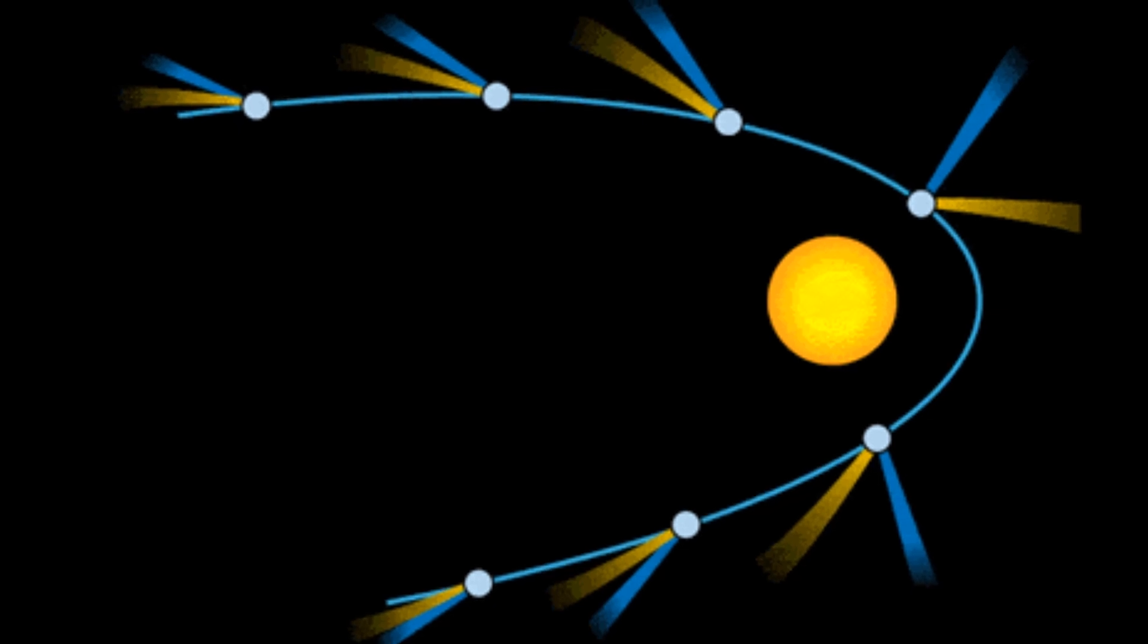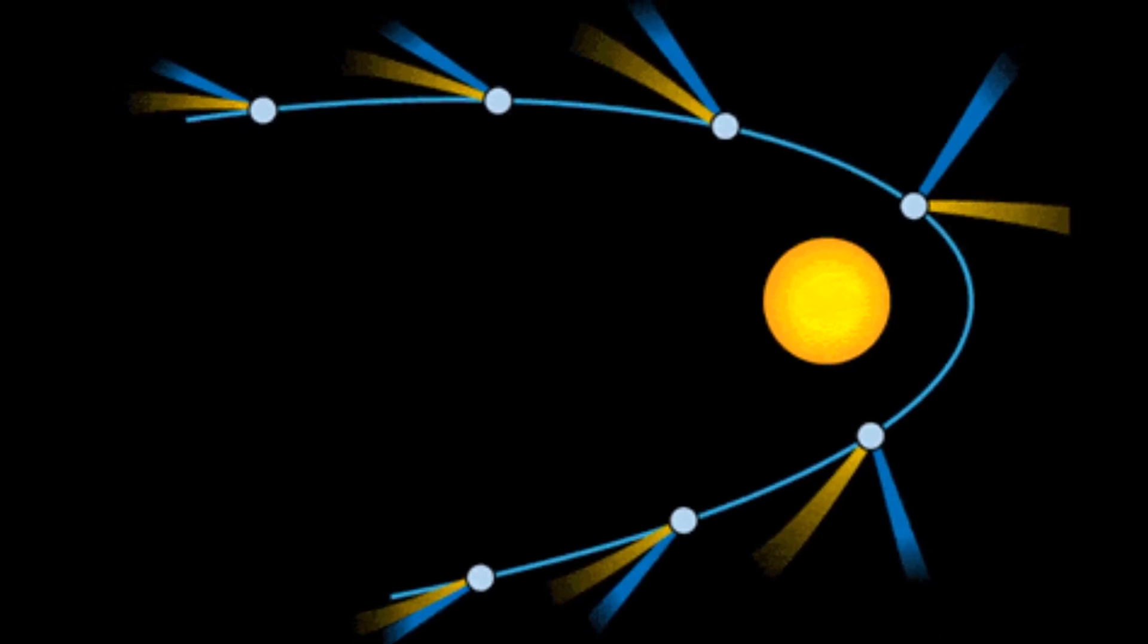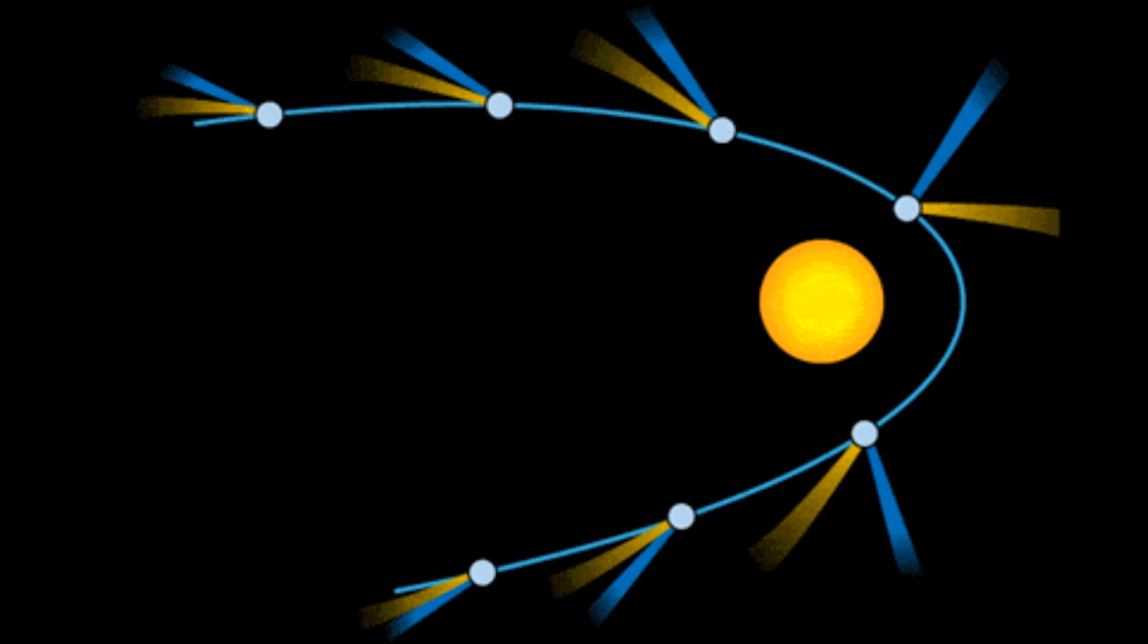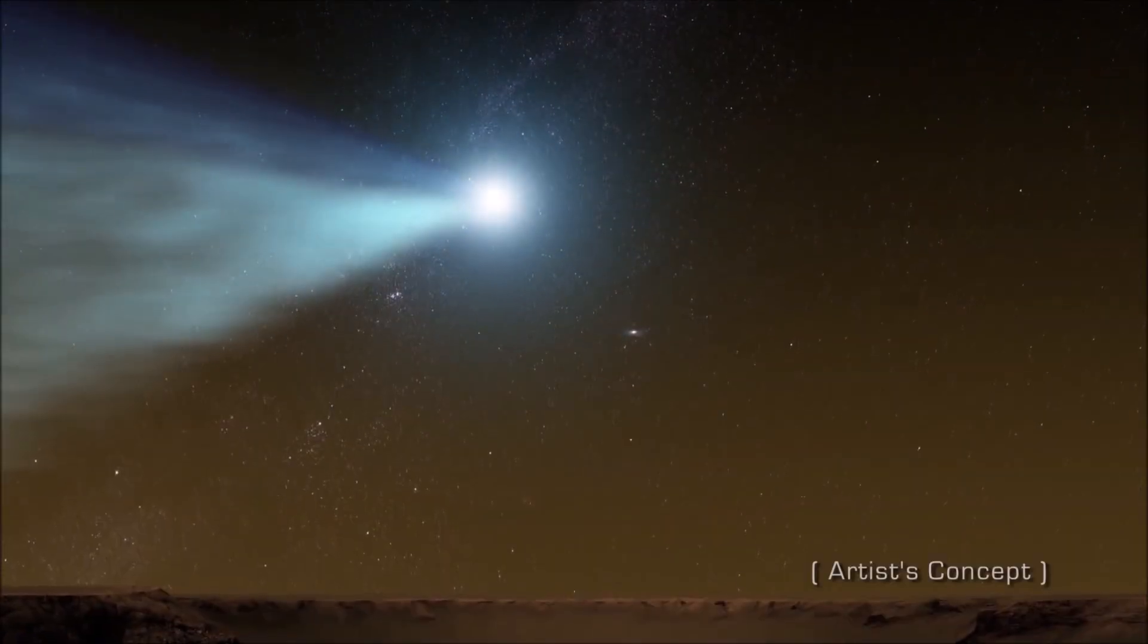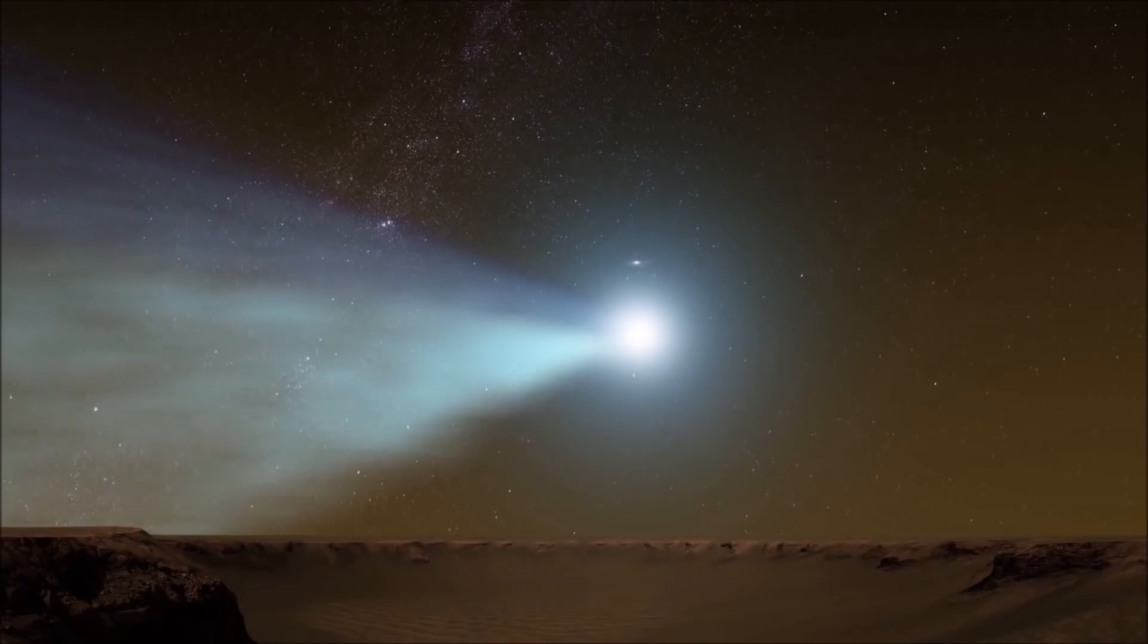The second tail is made of the dust released by the comet. The dust tail usually points back along the comet's path. A comet's tail may stretch as far as 6 million miles or 10 million kilometers long.